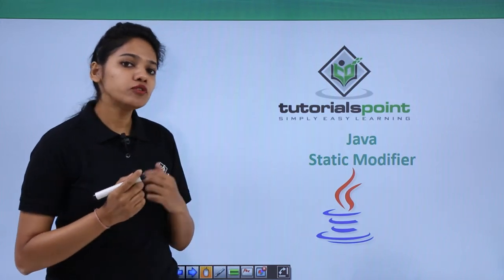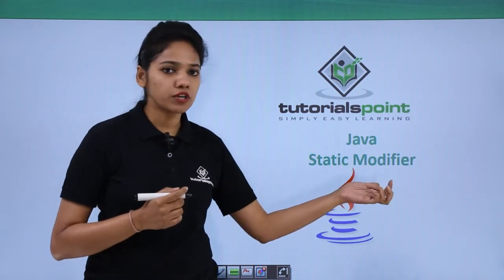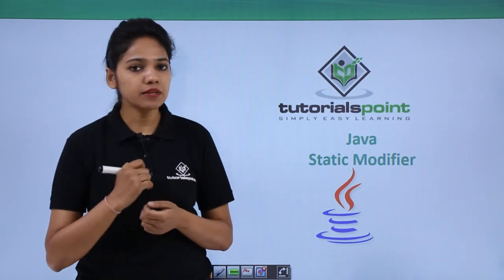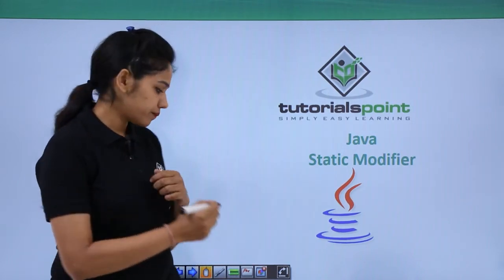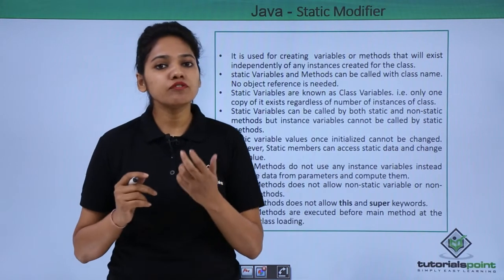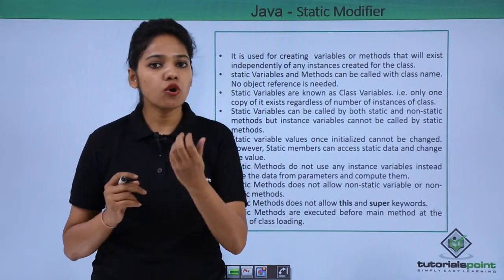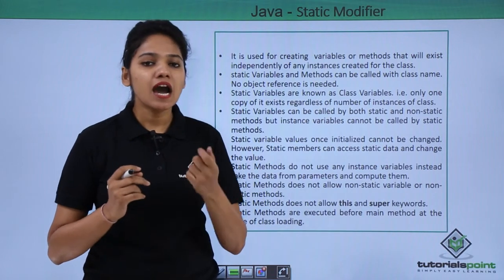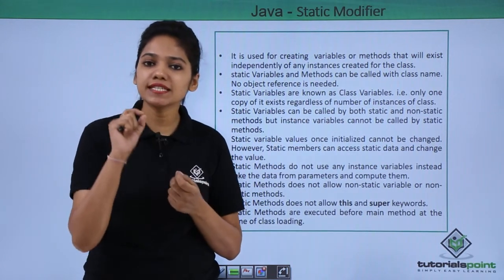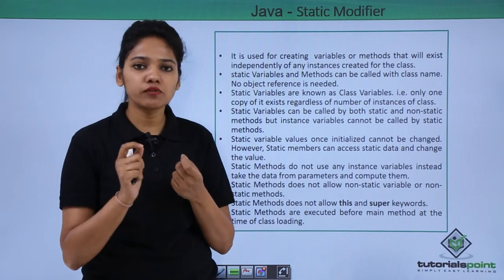The first type of non-access modifier is the static modifier. Let us learn in detail about the static modifier. A static modifier is used to create methods or variables as static, by simply using the keyword 'static' written before the method or the variable declaration.